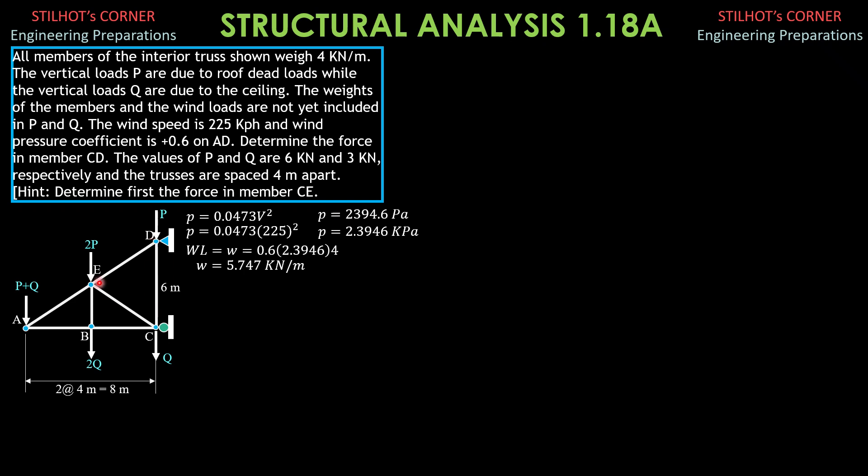So if the total length is 6, we divide this by 4 because the load on E, horizontal wind load on E is doubled. So if we divide this by 4, that means 1.5, the vertical projection for the wind load on A and on D, and 3 meters for the vertical projection at E.